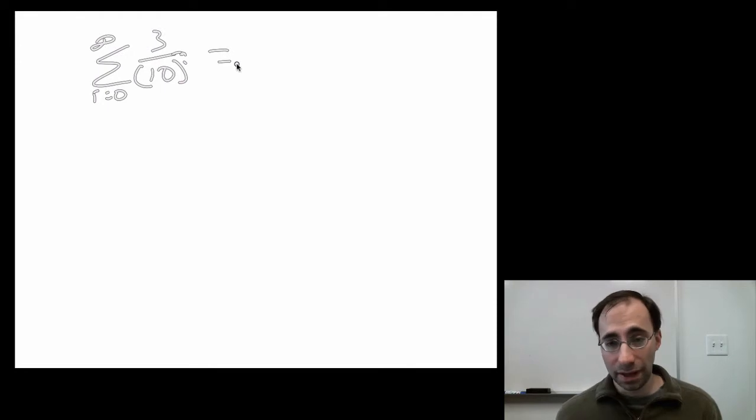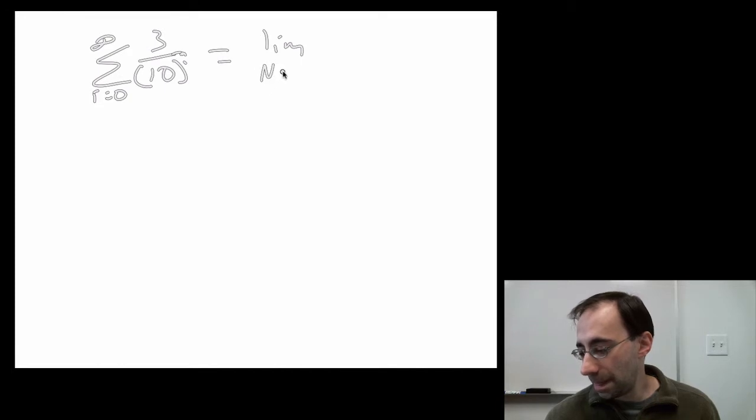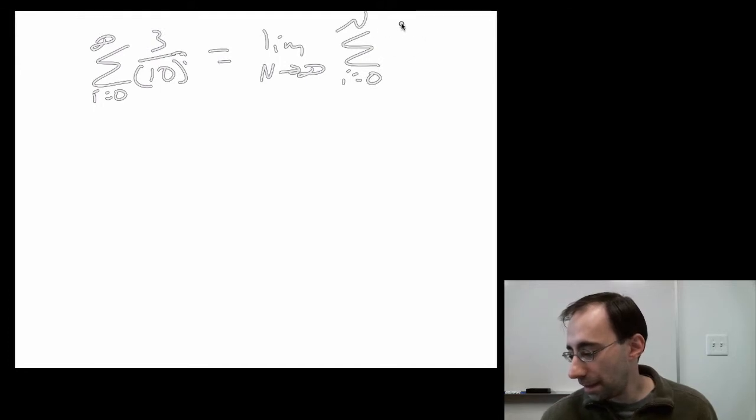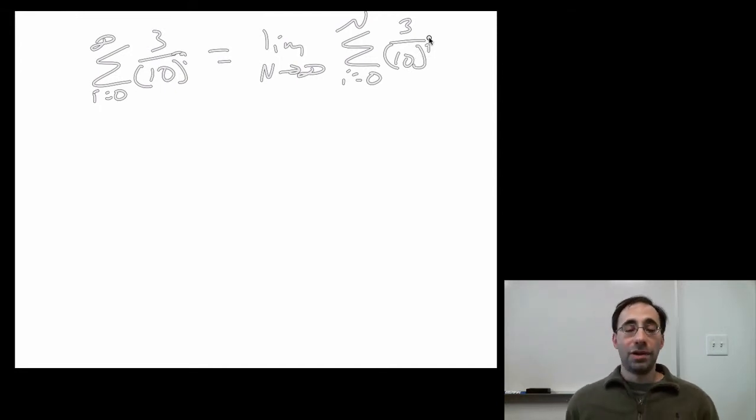Again, that's the same thing as taking the limit of, let's say, capital N going to infinity of the sum i equals zero to capital N, 3 over 10 raised to the power of i. Note, I'm changing i's and n's and t's left and right. These are indices. Indices are what are called dummy variables. They mean nothing in and of themselves. They serve only to keep track of some sequence.